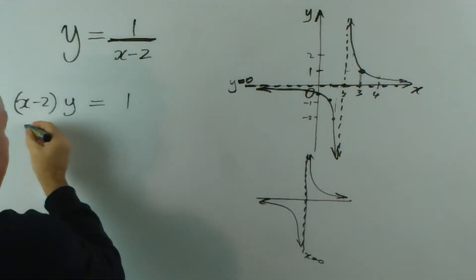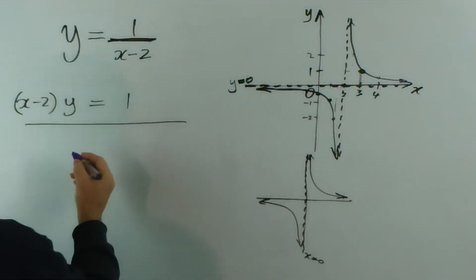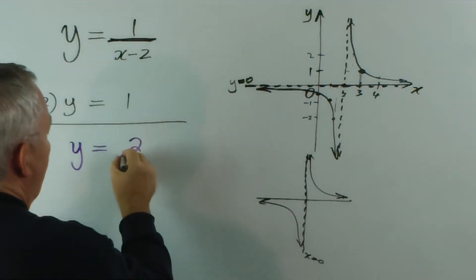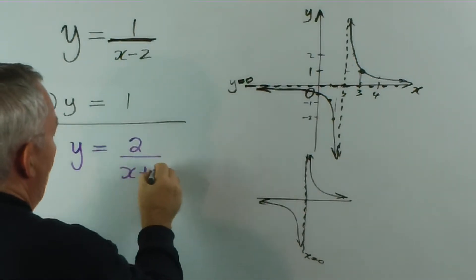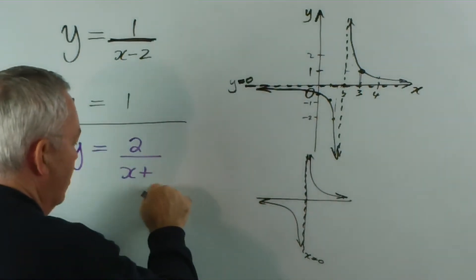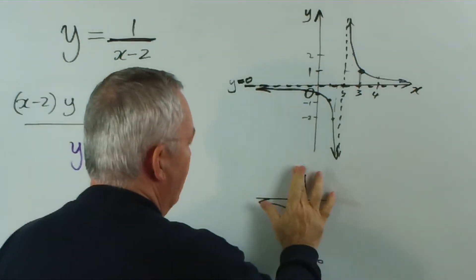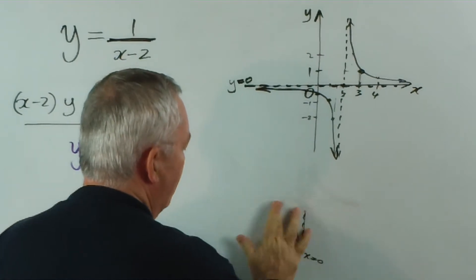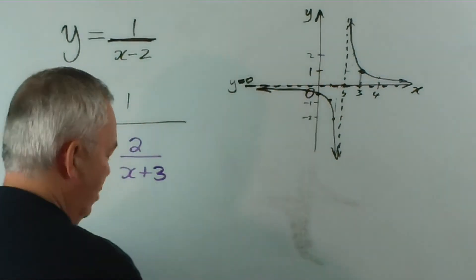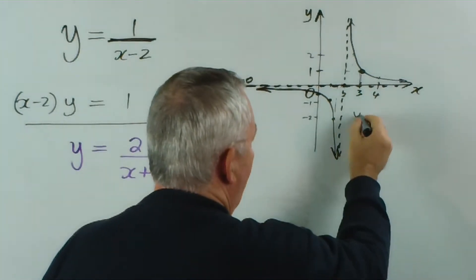So let me ask you a question — I'll change colours. If I asked you to graph this: let's do 2 over x plus 3, how would you graph that? Actually, let's make it a bit more interesting: x plus 3. I realise I don't really want this graph here — it might be a little bit too messy — so let's draw another graph.